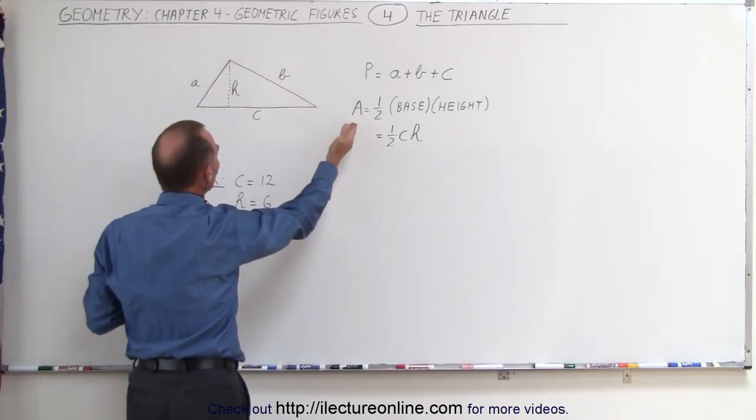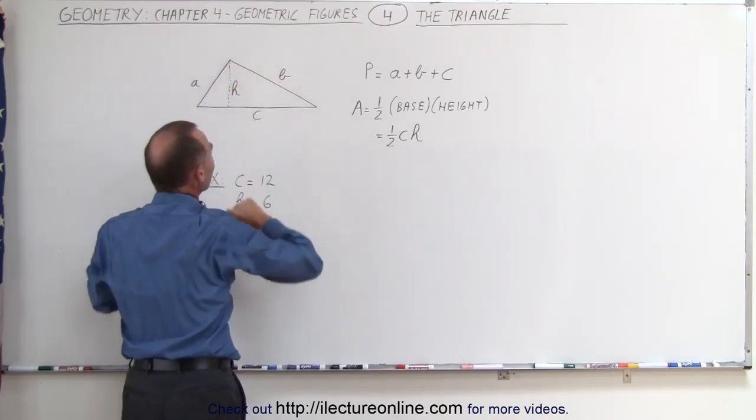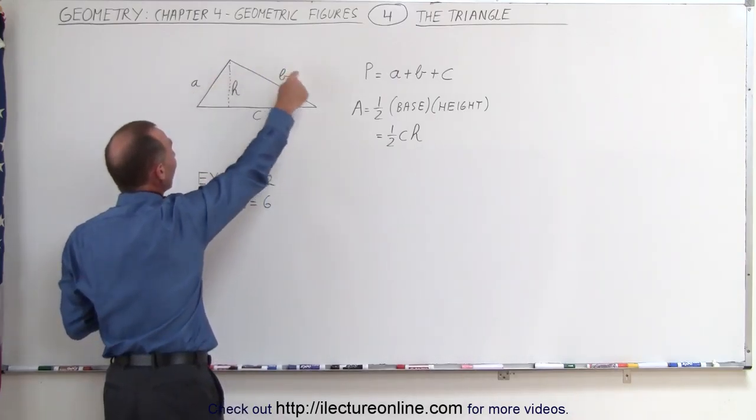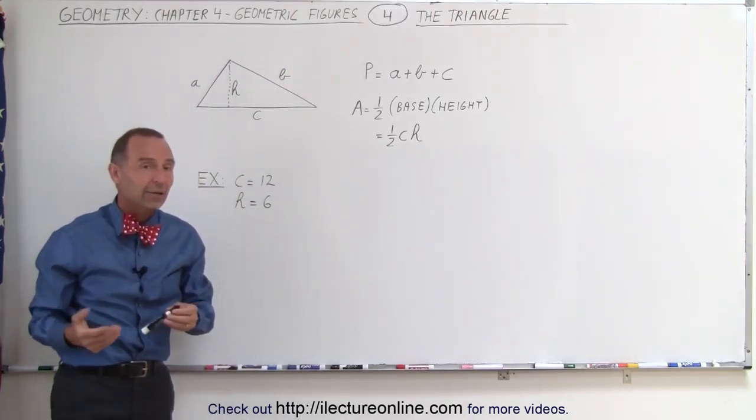In order to find the area, of course, we need to be given the height. If all they give us is the three sides, we're not going to find the area of the triangle.